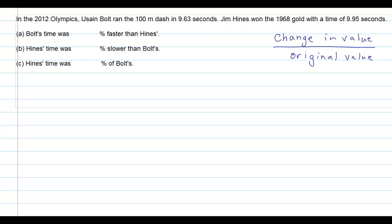This question asks us to compare two different race times of two different people. This is a little different than what we've done in the past. Before we talked about the change in value divided by the original value. Another way of thinking of that denominator isn't just original value, it's what we're comparing to.